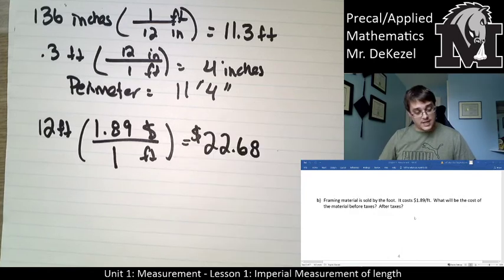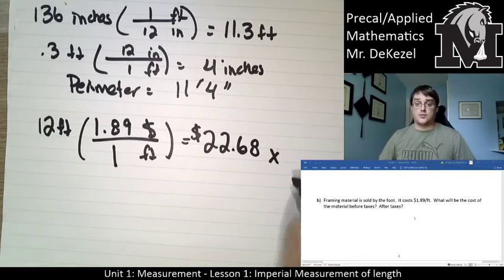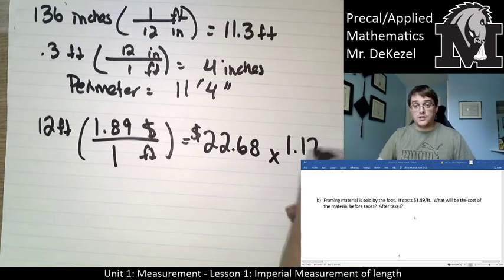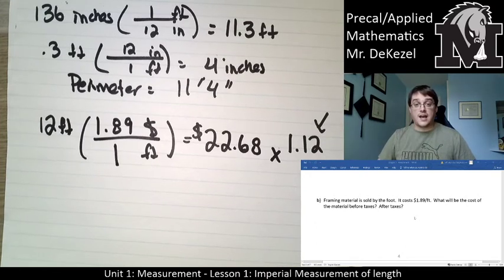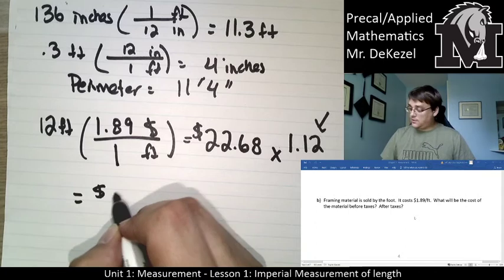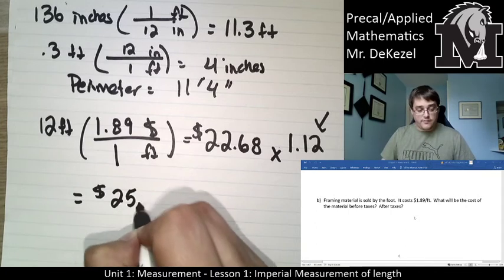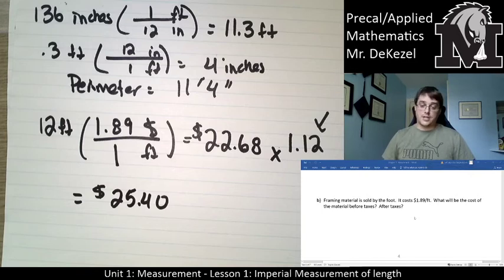Depending on taxes right now, we're going to multiply by 1.12 to add the 12% tax. After taxes, we get $25.40 to frame your picture — not too shabby.